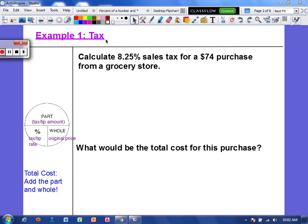Example one, we're going to focus on tax. Calculate 8.25% sales tax for a $74 purchase from a grocery store. So we have our percent, that's the tax rate. Now the $74, that's the original price, so that's the whole. So we are going to have a percent times a whole. That means that the part is missing, and that's the tax or tip amount. So we're going to change 8.25% to a decimal. We're going to paddle to the left twice. That would be .0825. And we're going to multiply that times 74.